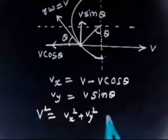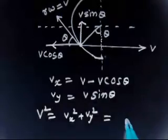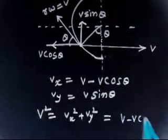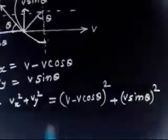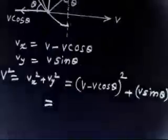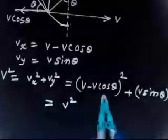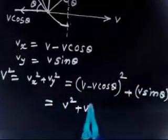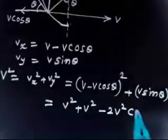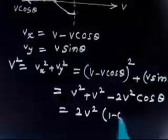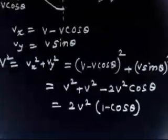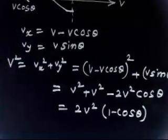Expanding: v² = (v − v cosθ)² + (v sinθ)² = v² − 2v² cosθ + v² cos²θ + v² sin²θ = 2v² − 2v² cosθ = 2v²(1 − cosθ).